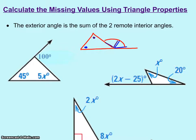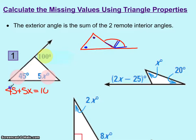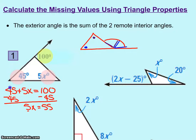In this first example, we're looking at the two remote interior angles — that's the 45 and the 5x — and together they will equal the outside angle of 100. So our equation is: 45 plus 5x equals 100. Solving that equation by subtracting 45 from both sides, 5x equals 55. Dividing by 5, x equals 11.